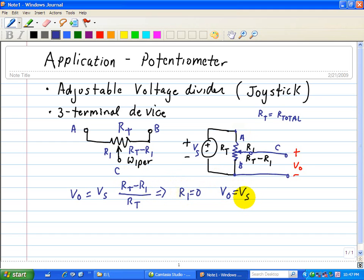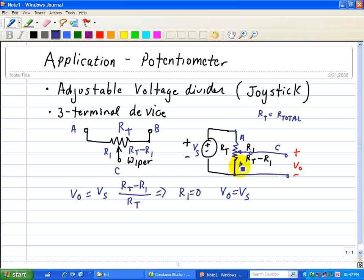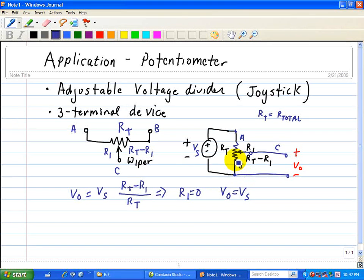Now, if the wiper of node C is at the bottom where it's located at node B, then R1 is equal to RT. So RT minus RT, so V0 is equal to 0.